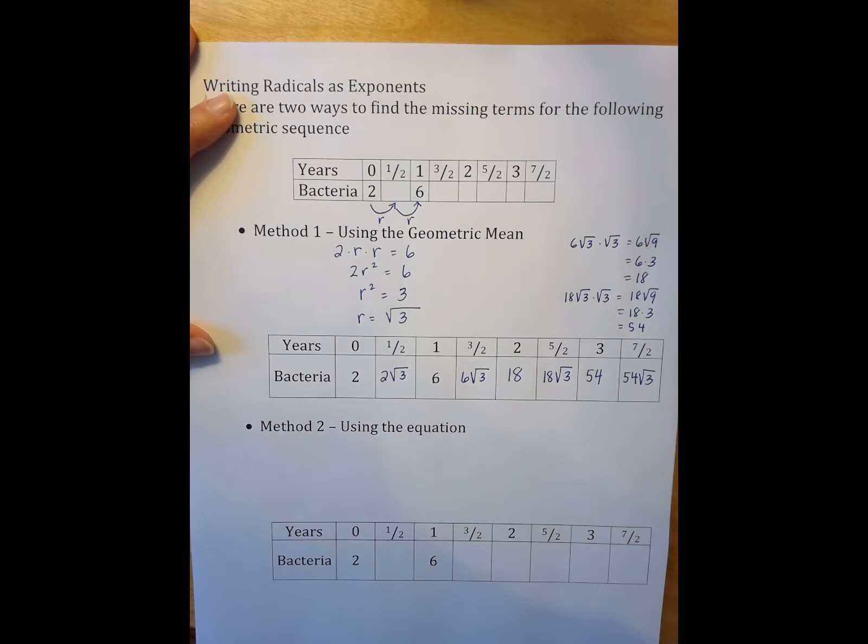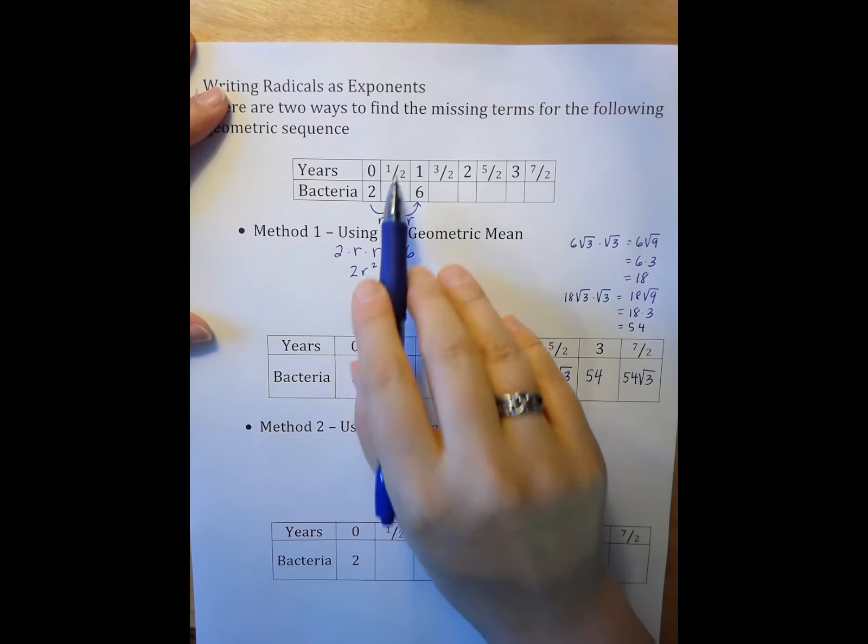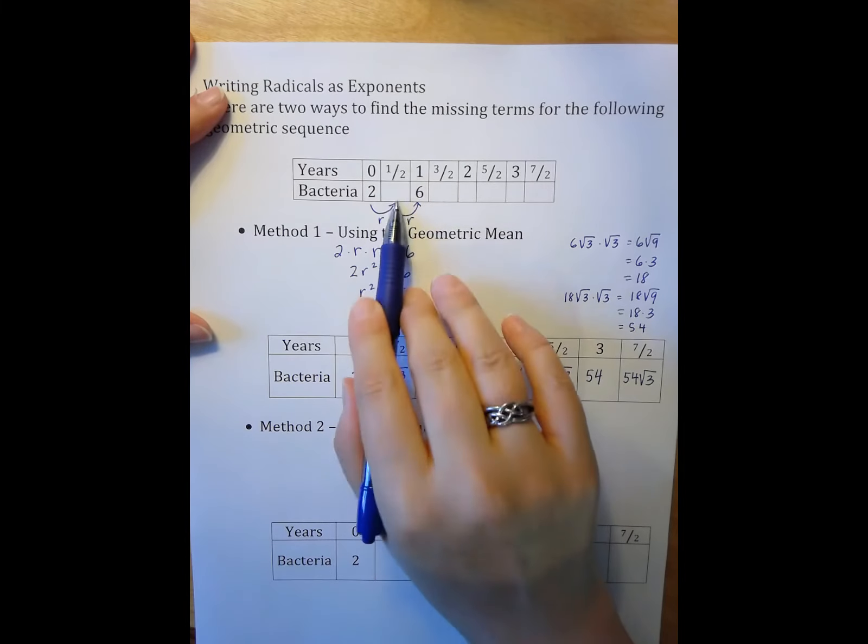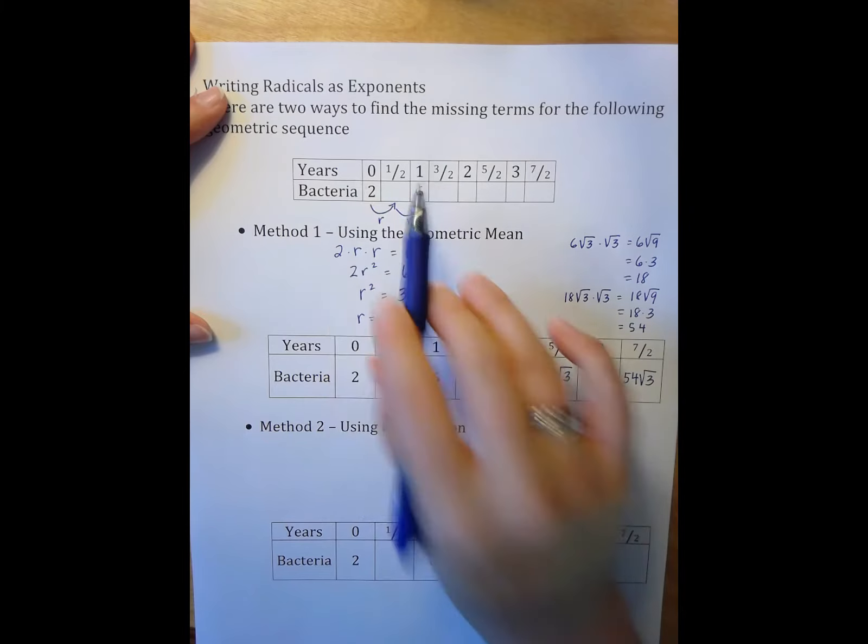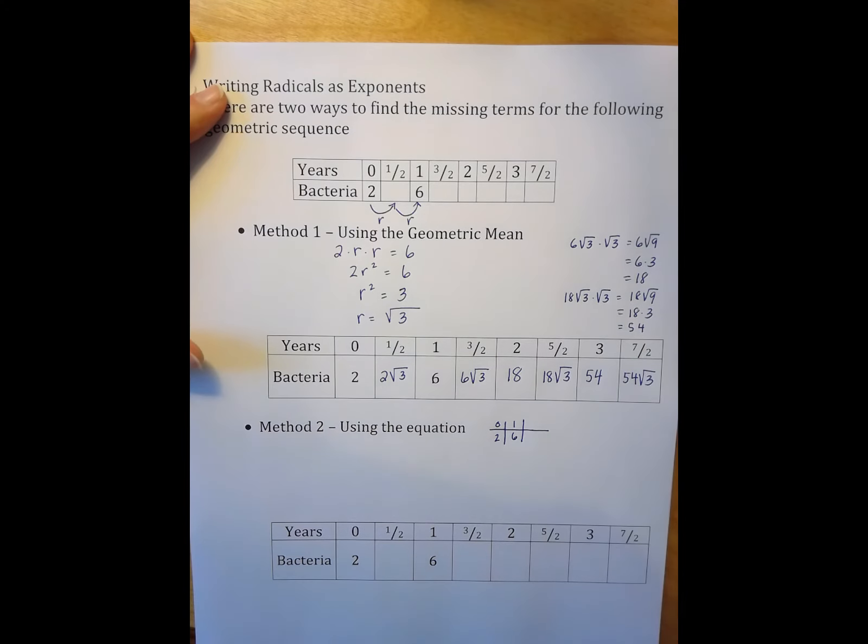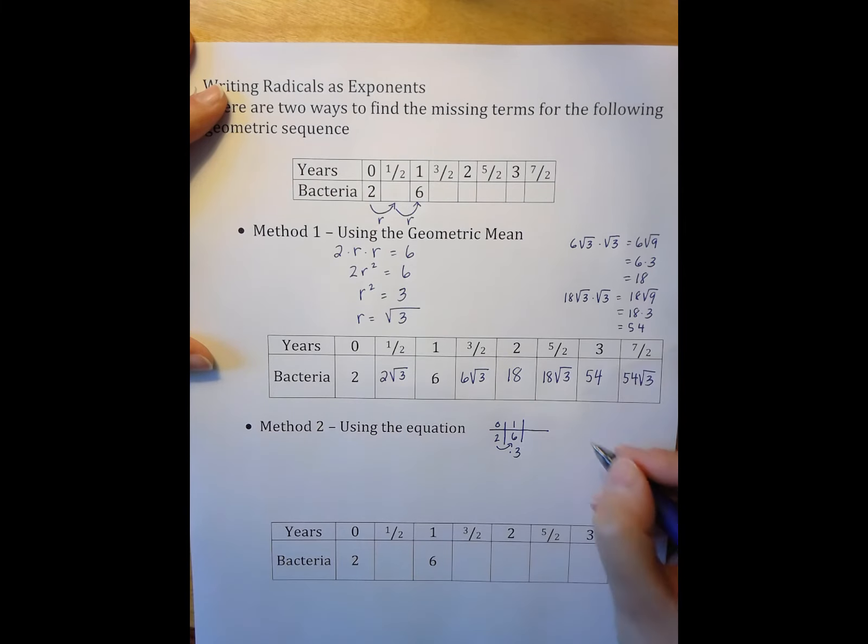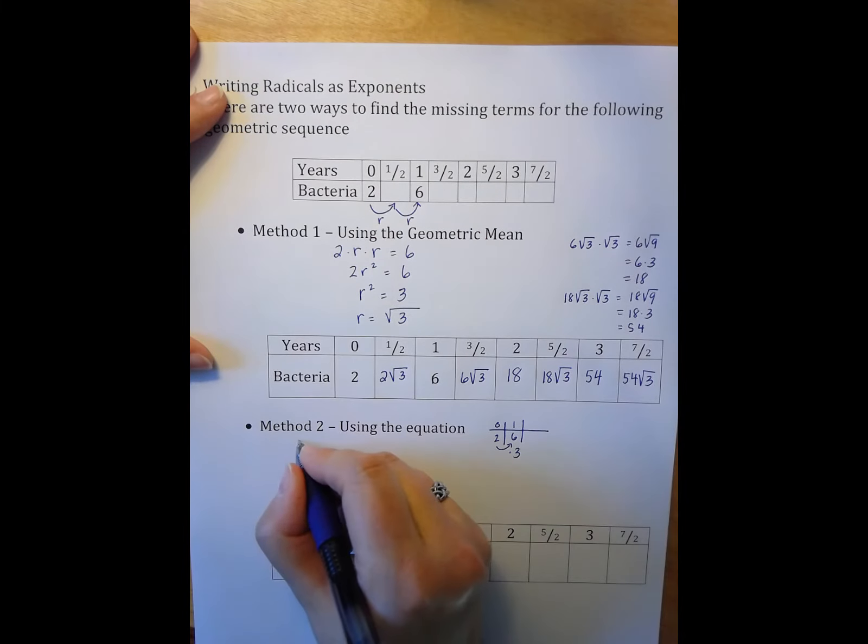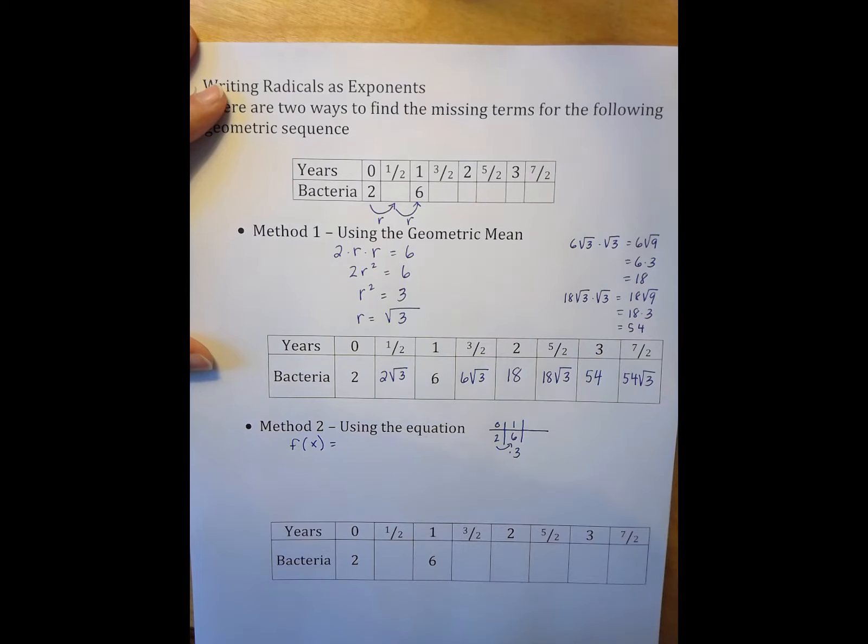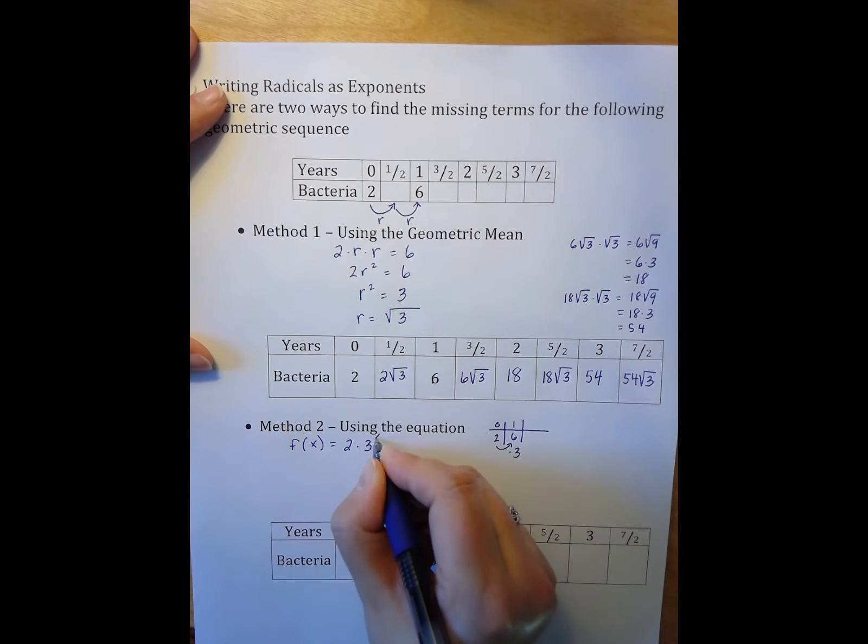Now we have a second method that we can use where we're using the equation. If we go back and pretend that we don't have these middle terms here, instead we just look at the 0, 2, and 1, 6. So what I'm doing here each time is multiplying by 3, which means that if I write this as my equation, f(x) equals 2 times 3 to the x power.